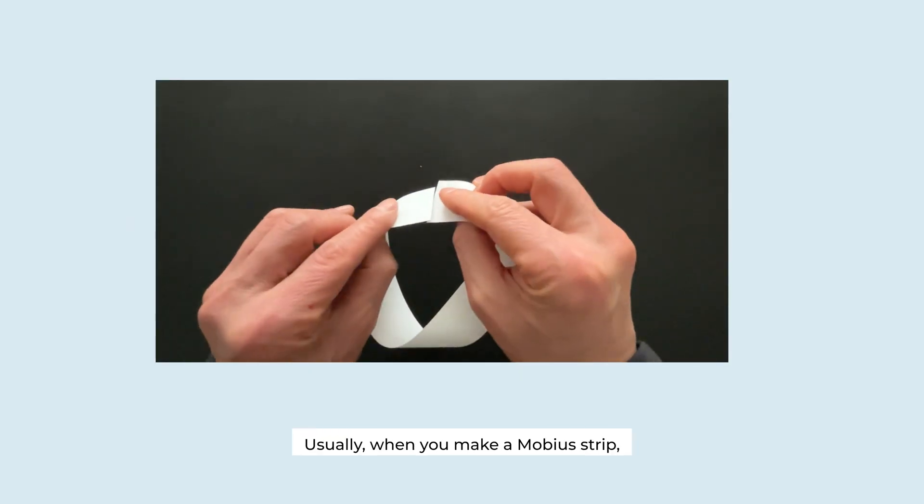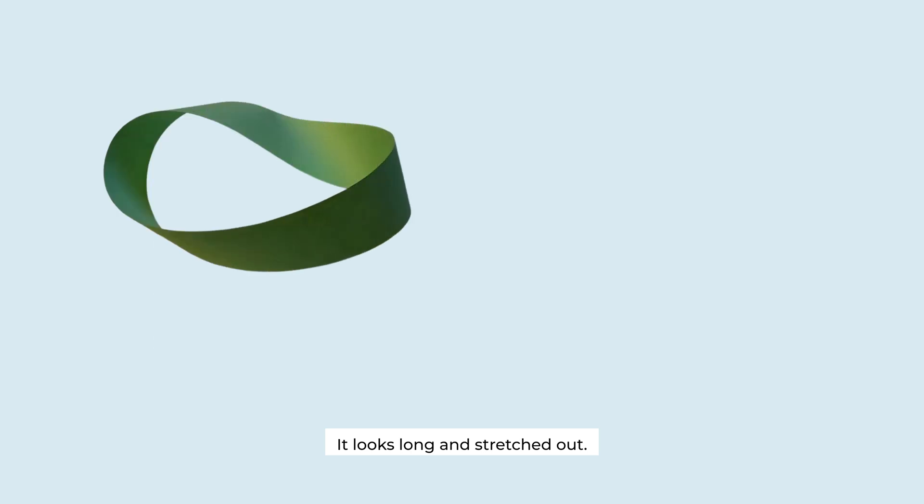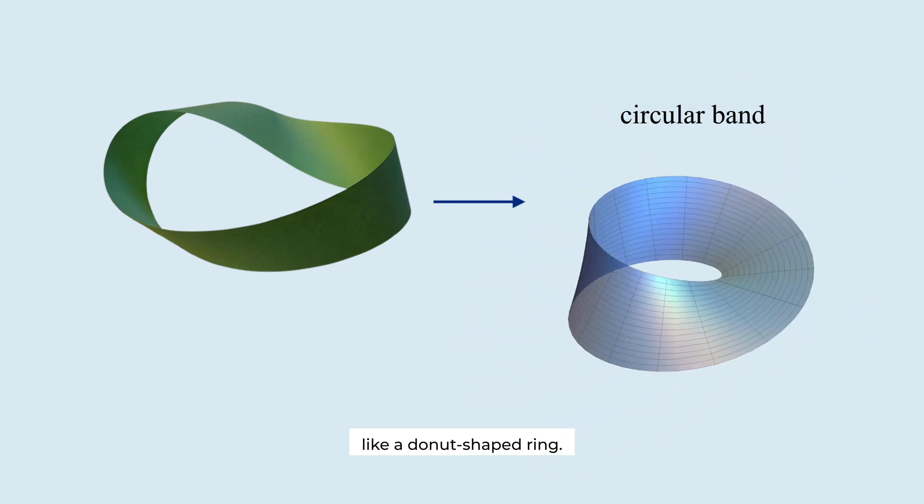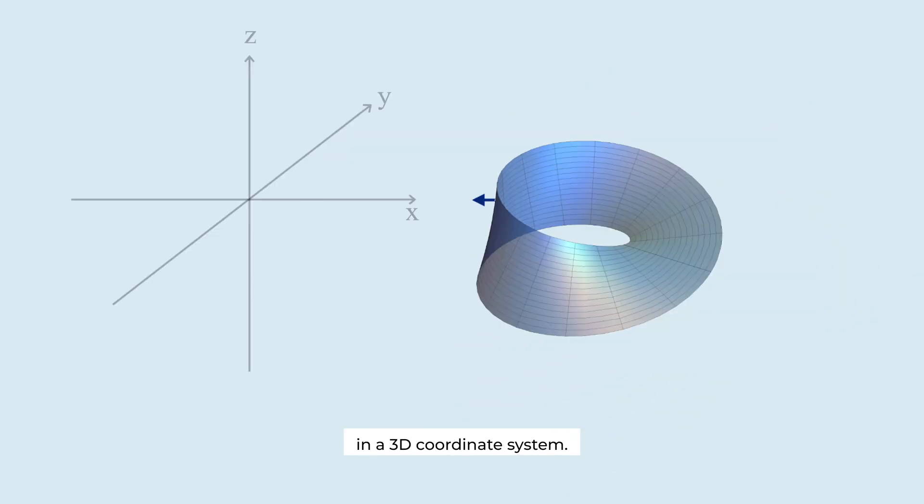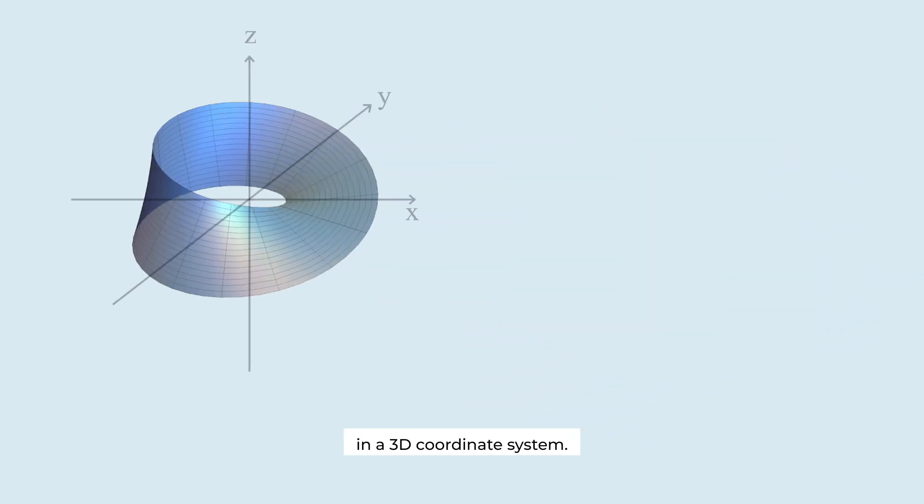Usually when you make a Möbius strip, it looks long and stretched out. But let's think of it as a circular band like a donut-shaped ring. We'll place this strip in a 3D coordinate system. Every point on it has three coordinates: x, y, and z.